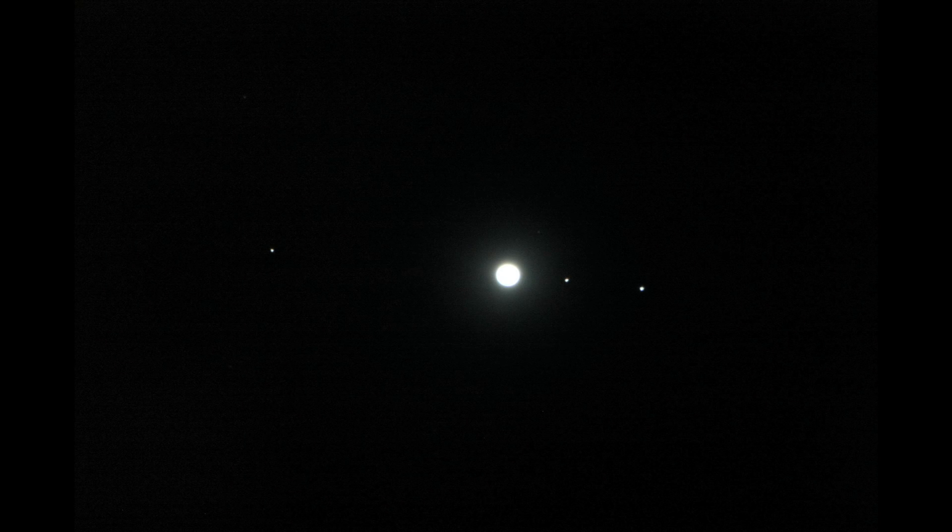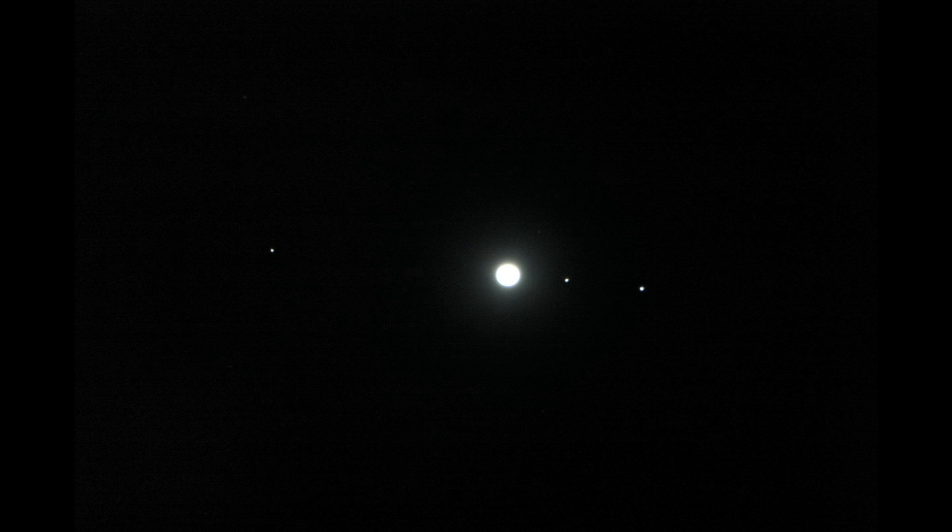And of course with Jupiter, at low power, we can see the four moons. Actually when I took this picture, only three moons were on view. And then you turn up the power on your telescope using a different eyepiece and you can see detail on the planet.